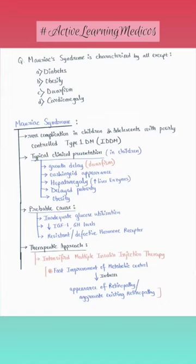Typical clinical presentation in children includes growth delay (dwarfism), cushingoid appearance, hepatomegaly causing increased liver enzymes, delayed puberty, and obesity. Probable causes include inadequate glucose utilization, decreased IGF-1, GH levels, and resistant hormone receptors.